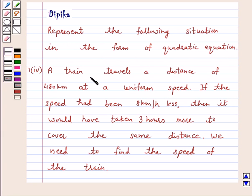A train travels a distance of 480 km at a uniform speed. If the speed had been 8 km per hour less, then it would have taken 3 hours more to cover the same distance.